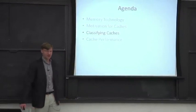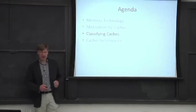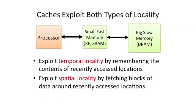Reviewing what caches look like: you have big, slow memories and a processor. You build small, fast memories close to the processor, and if there's a high probability that the data you need is in that small, fast memory, you don't have to go out to the big, slow memory as often, saving power and improving performance.